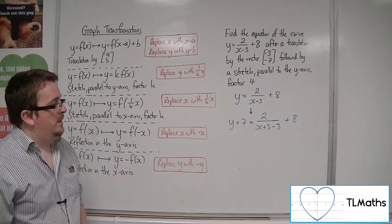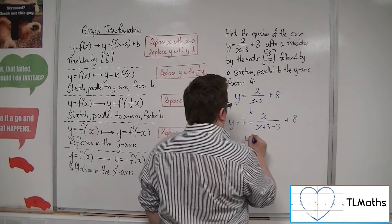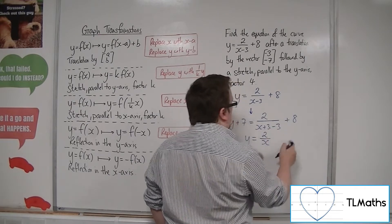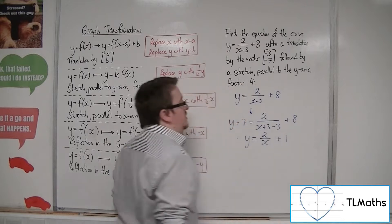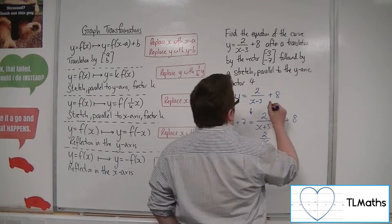Okay, now let's tidy that up. So we're going to have 2 over just x. We've got the plus 8, take 7 from both sides and we get 2 over x plus 1. So that is the translation.